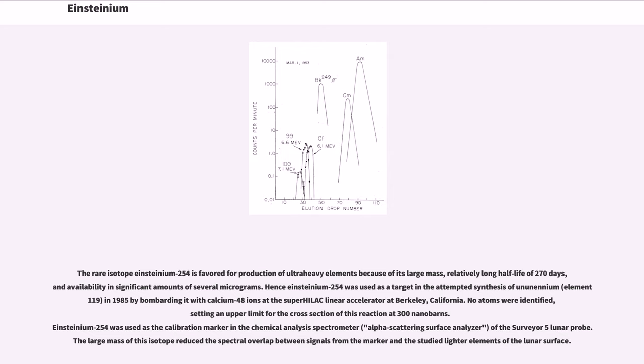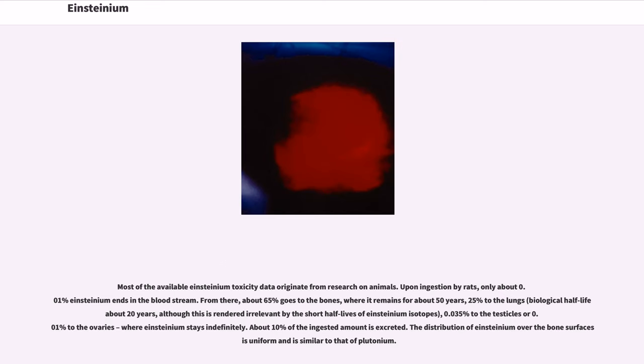Most of the available Einsteinium toxicity data originate from research on animals. Upon ingestion by rats, only about 0.01% Einsteinium ends in the bloodstream. From there, about 65% goes to the bones, where it remains for about 50 years, 25% to the lungs, biological half-life about 20 years, although this is rendered irrelevant by the short half-lives of Einsteinium isotopes, 0.035% to the testicles or 0.01% to the ovaries, where Einsteinium stays indefinitely. About 10% of the ingested amount is excreted. The distribution of Einsteinium over the bone surfaces is uniform and is similar to that of plutonium.